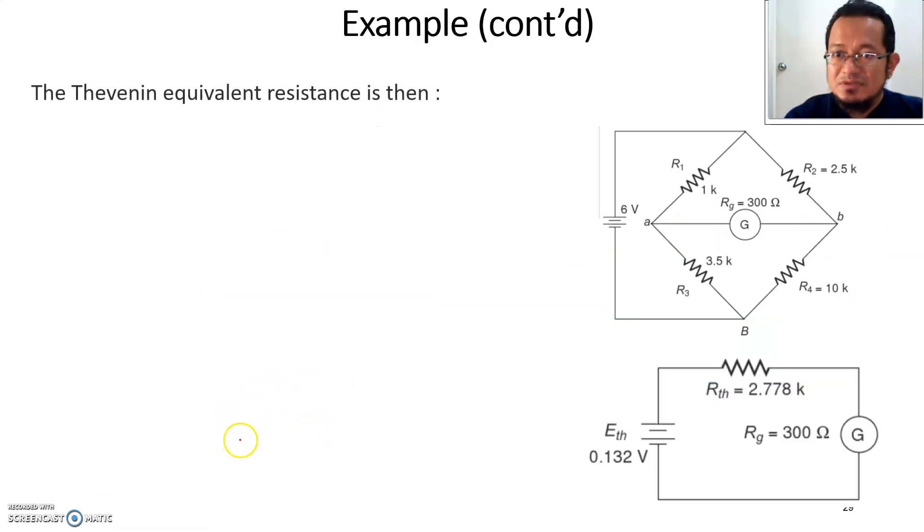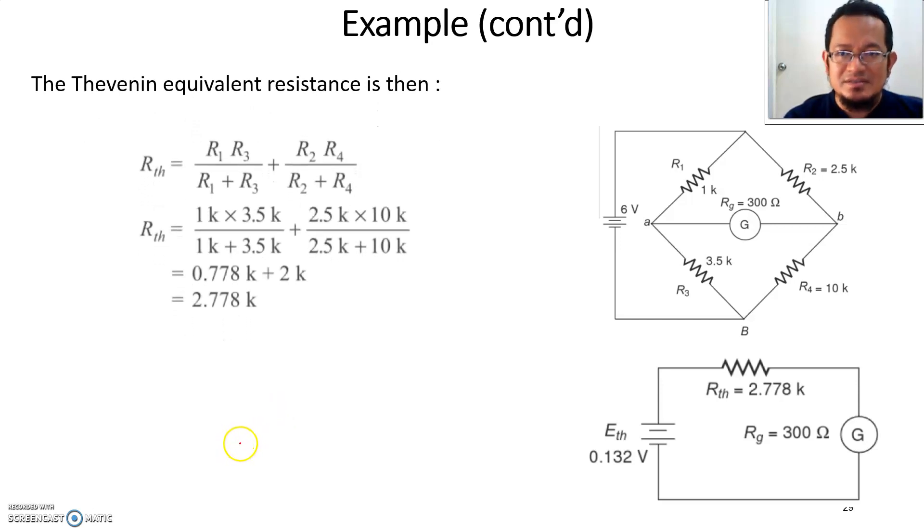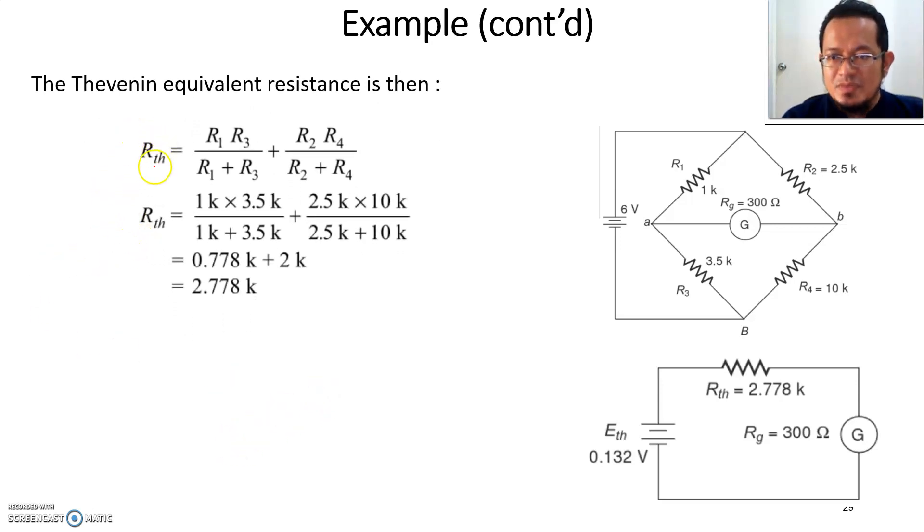The next step is to find the equivalent Thevenin resistance. You can redraw the circuit and remove the galvanometer and short the voltage source, but just use this formula we've given before. It's R1 multiplied by R3 divided by R1 plus R3, so basically this branch.